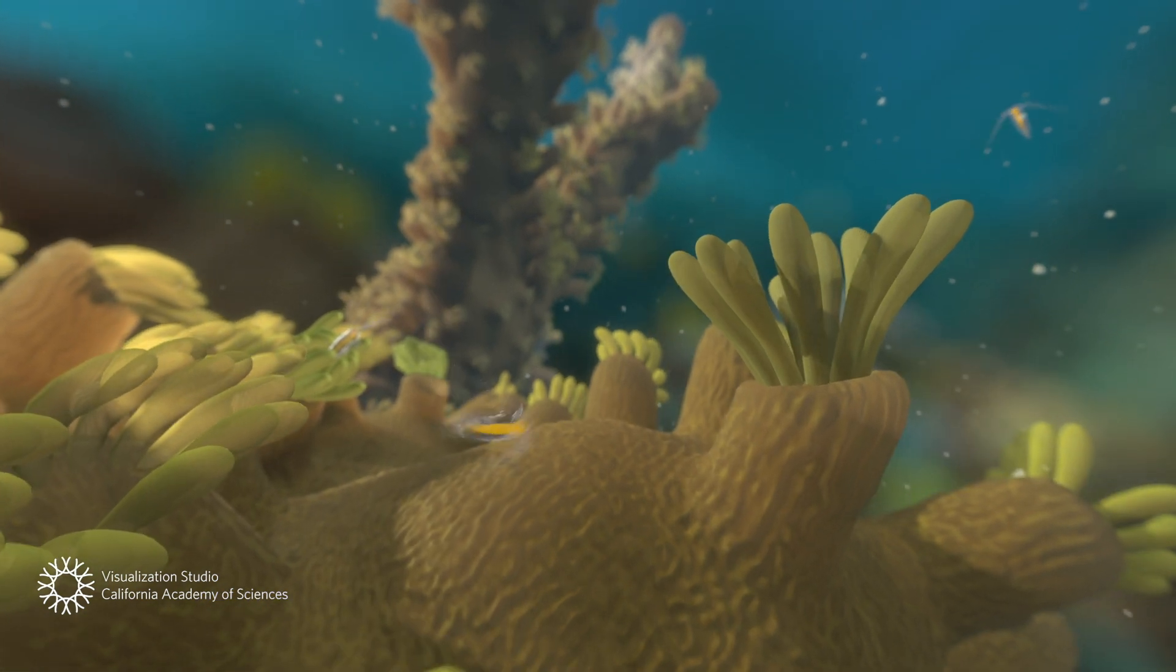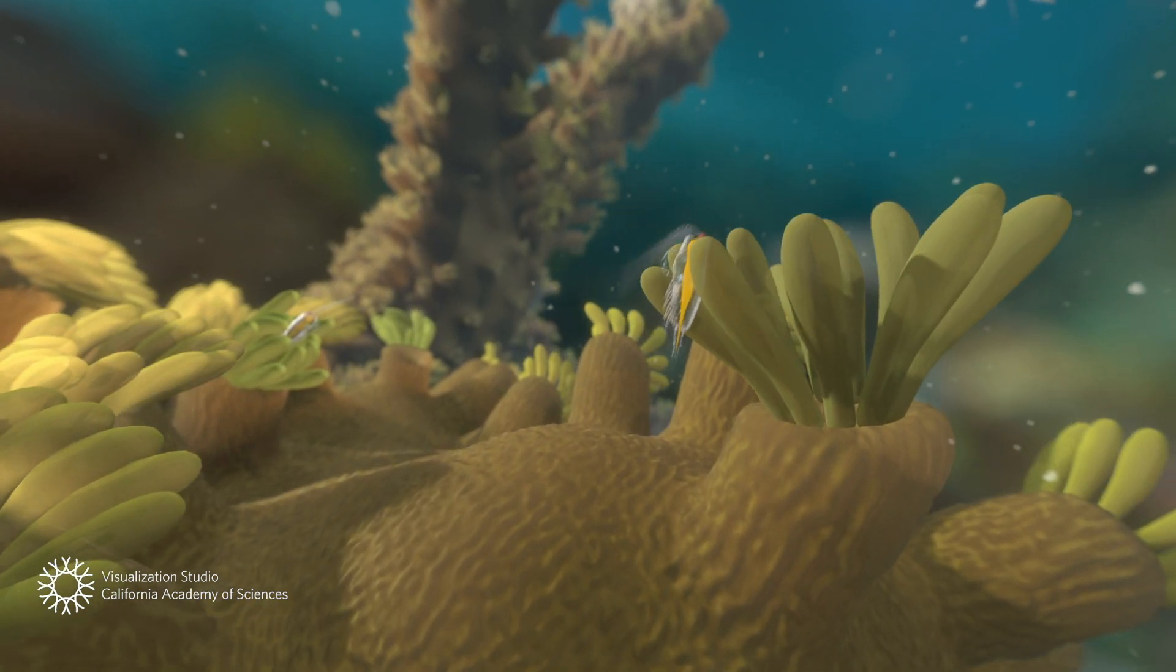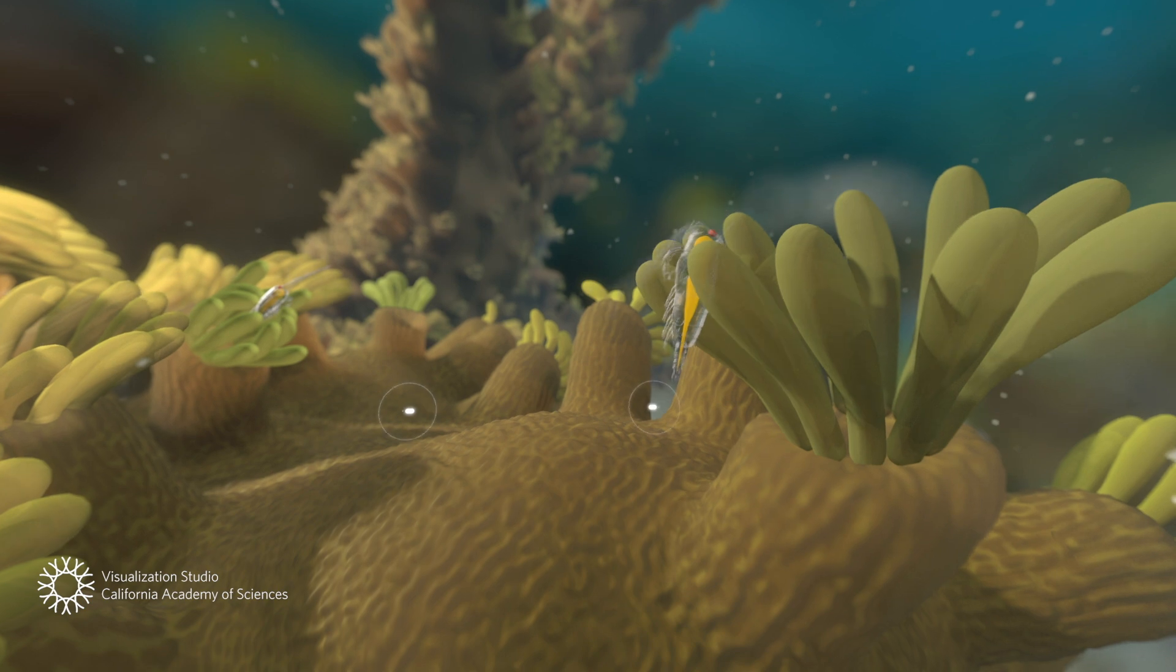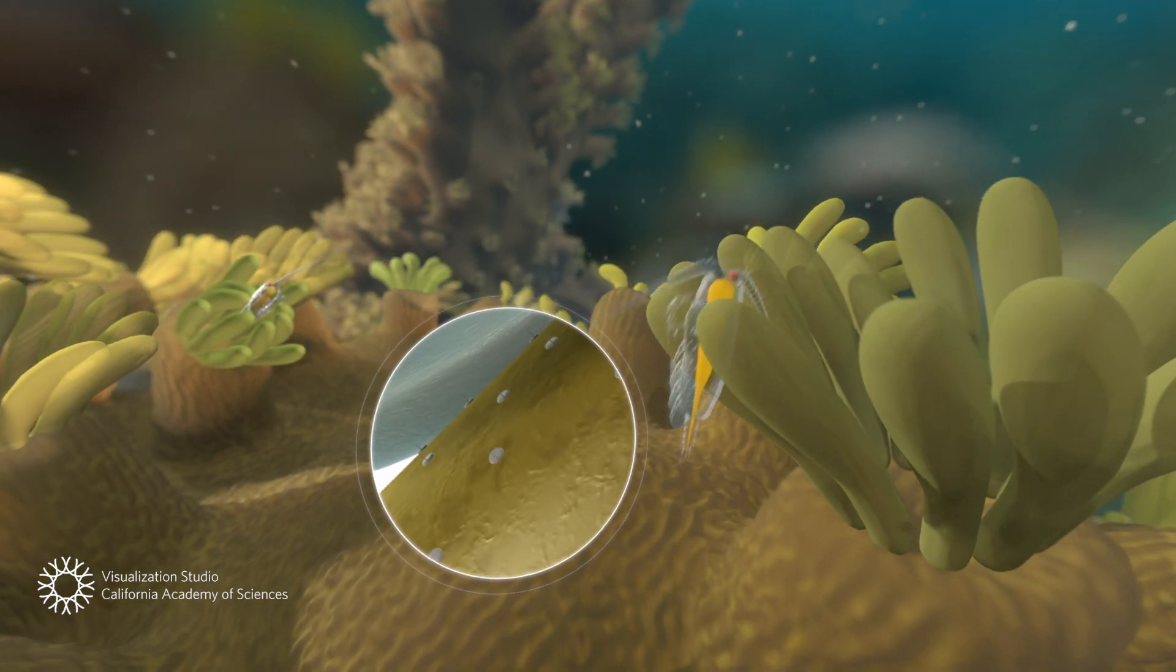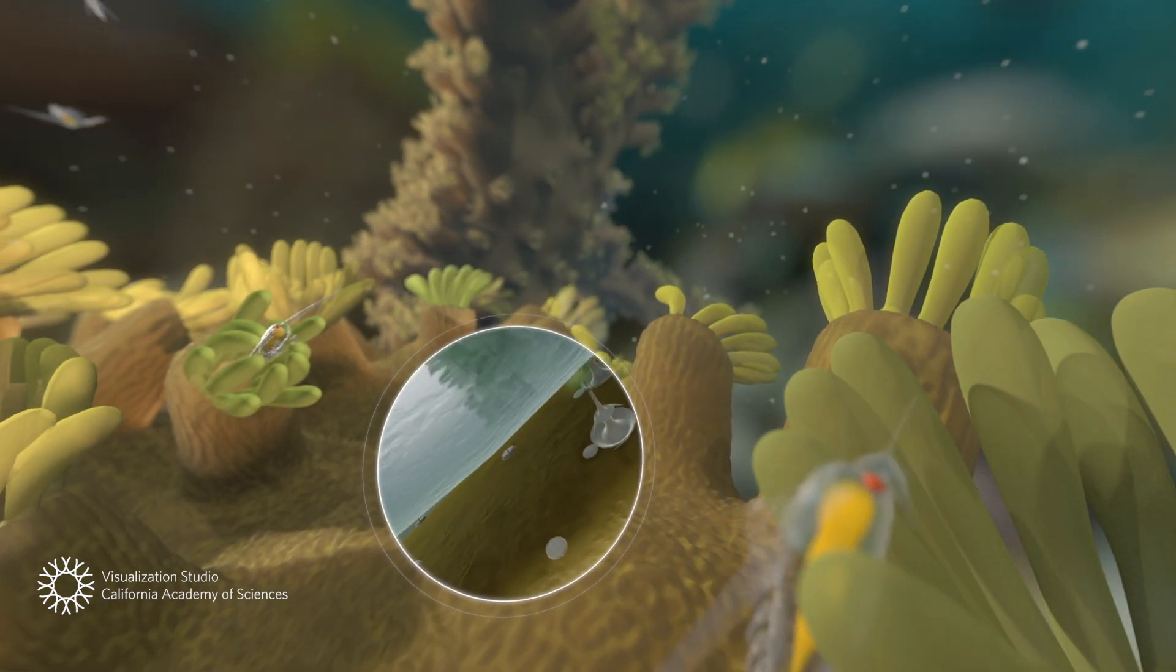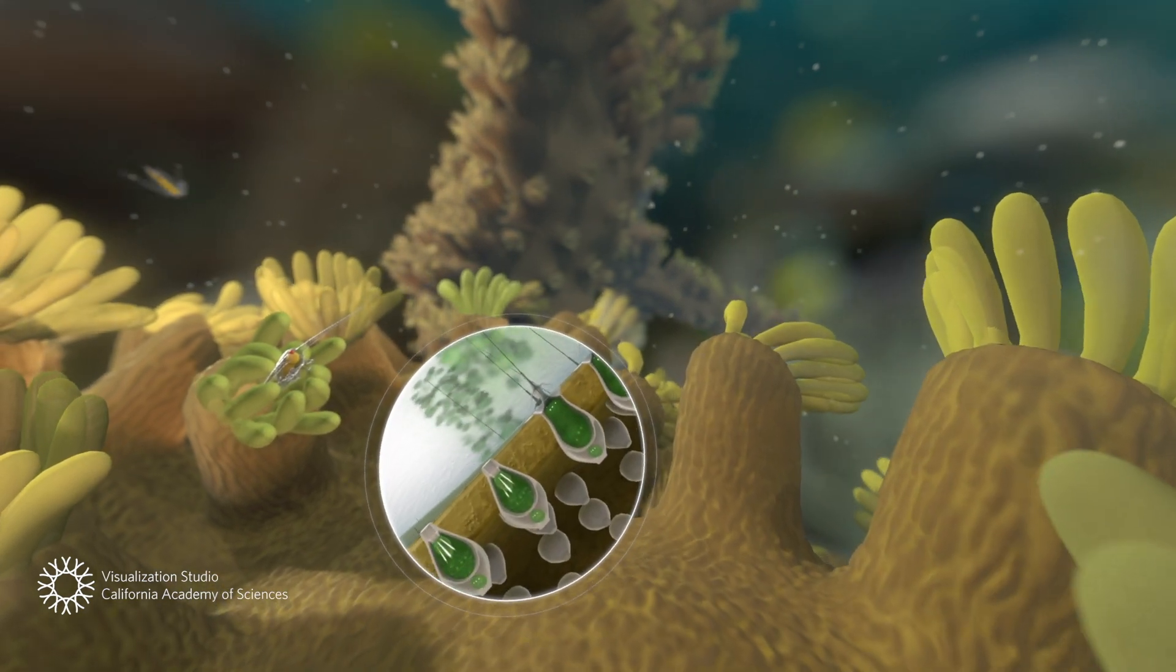Here, a polyp captures its prey. Similar to the sting of its relative, the jellyfish, the coral harpoons its meal with microscopic hooks released from its tentacle.